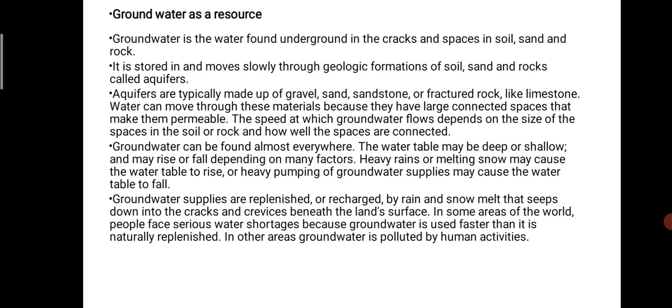Groundwater can be found almost everywhere. The water table may be deep or shallow and may rise or fall depending on many factors. Heavy rain or melting snow may cause the water table to rise, as may heavy pumping of groundwater. If global warming increases, the water table will rise; if global warming decreases, the level of groundwater will fall.